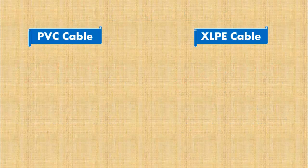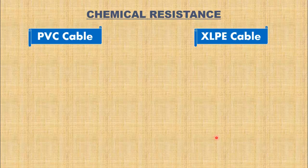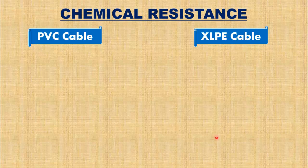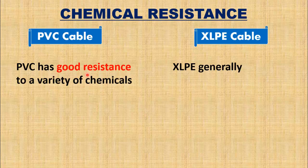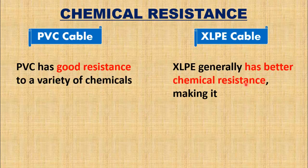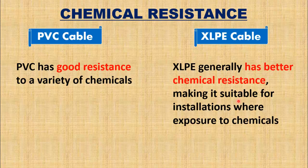The next difference is based on chemical resistance. PVC has good resistance to a variety of chemicals, whereas XLPE generally has better chemical resistance, making it suitable for installations where exposure to chemicals is a concern.